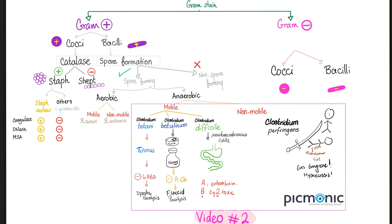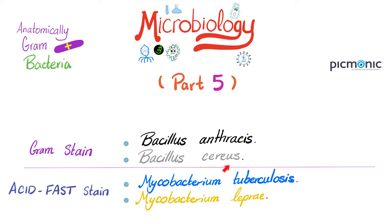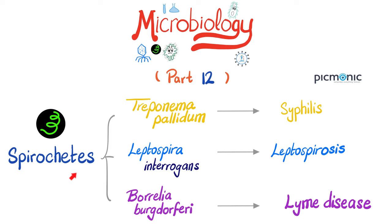Spore-forming gram-positive rods include Bacillus cereus, Bacillus anthracis, and the anaerobic spore-forming ones: Clostridium tetani causes tetanus, Clostridium botulinum causes botulism, Clostridioides difficile causes pseudomembranous colitis, and Clostridium perfringens causes gas gangrene and muscle necrosis. Today we are talking about bacteria that are anatomically gram-negative but do not stain well with gram stain, and sometimes the only way to see them is with a dark field microscope.